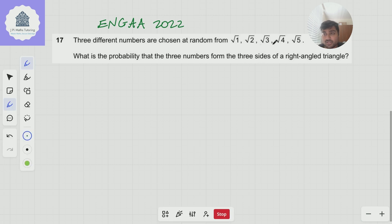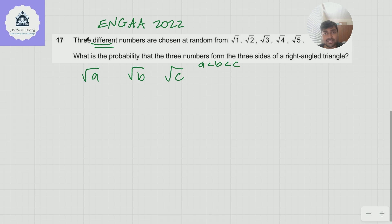So we're going to choose three of these lengths and clearly they're all roots of positive integers. So we're going to call them root a, root b and root c and without loss of generality a is going to be less than b is going to be less than c and I know this because they're all different.